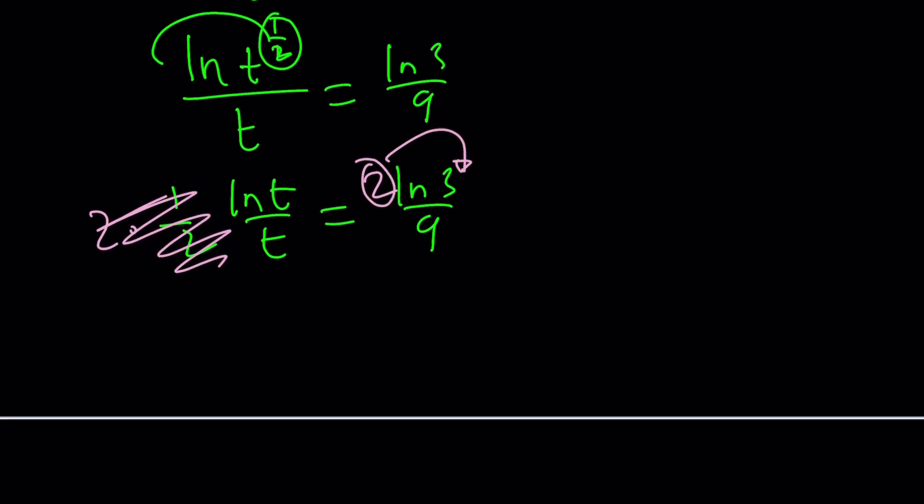You can now move back, make it an exponent. And this gives you ln(t)/t = ln(9)/9. Because this is 2ln(3)/9, which is ln(3^2)/9. And 3 squared, as you know, is 9. Awesome.